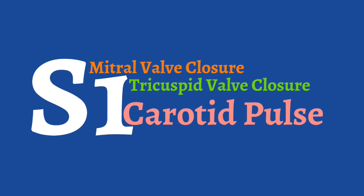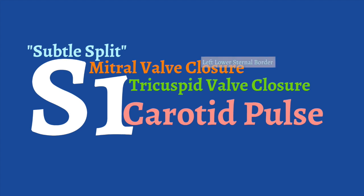Keep in mind, S1 consists of two heart sounds. Occasionally, if you listen closely, you'll be able to perceive a natural split in S1. The difference between these heart sounds is a fourth of a second, so it is very subtle. If you listen over the left lower sternal border, you'll be able to hear the mitral valve component of S1 the loudest. The tricuspid portion is best heard in the left third and fourth intercostal space as a very soft beat.